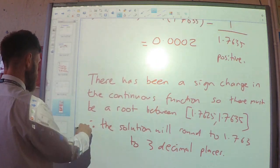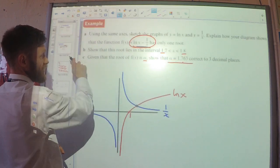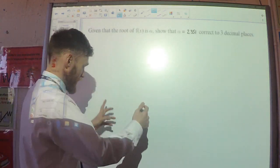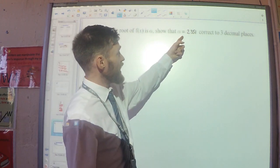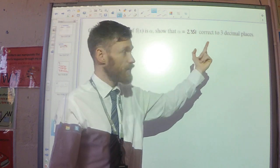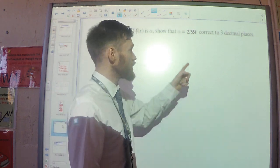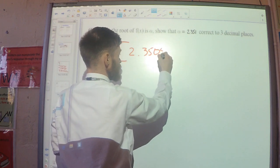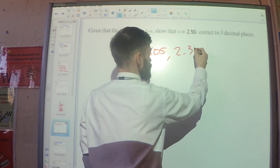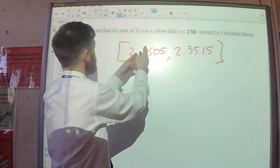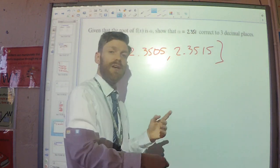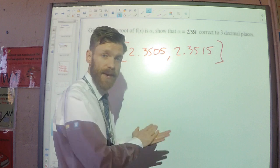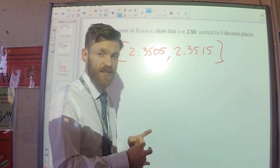Whenever you get a question like this, you consider the interval from the lower bound to the upper bound. For example, if asked to show that alpha = 2.351 to three decimal places, you would consider the lower bound 2.3505 and the upper bound 2.3515, substitute each into your function, show there is a sign change, and then write the concluding sentence. This is all about the location of roots and how we find them by looking for a sign change on an interval.